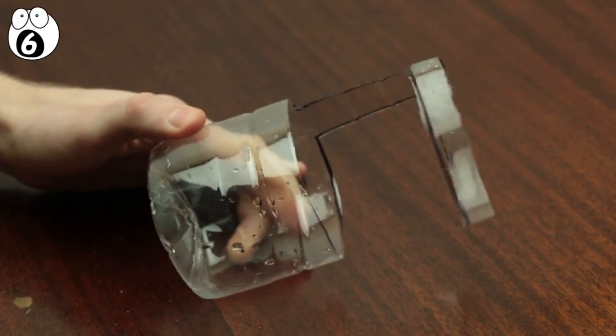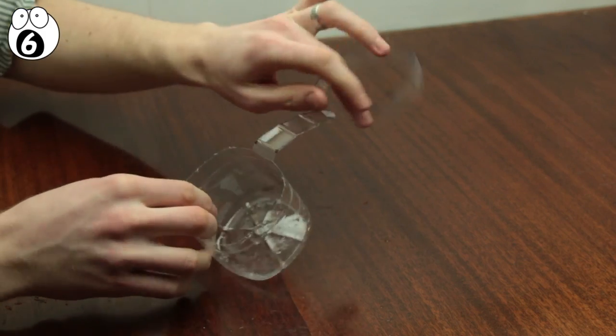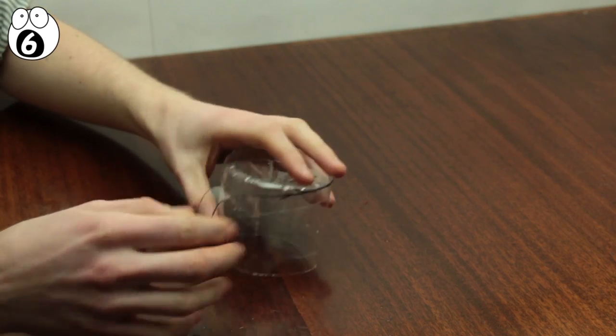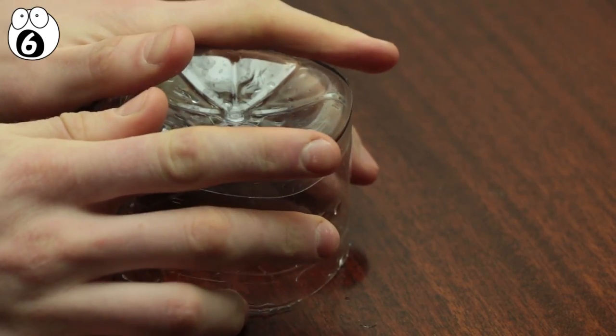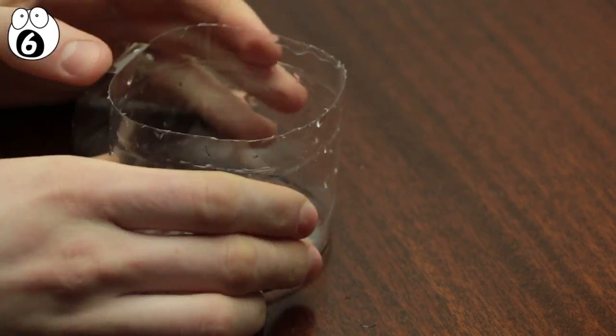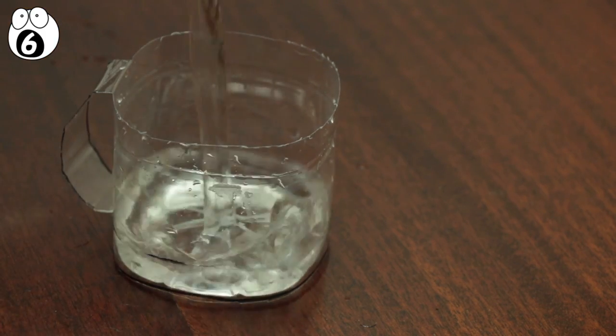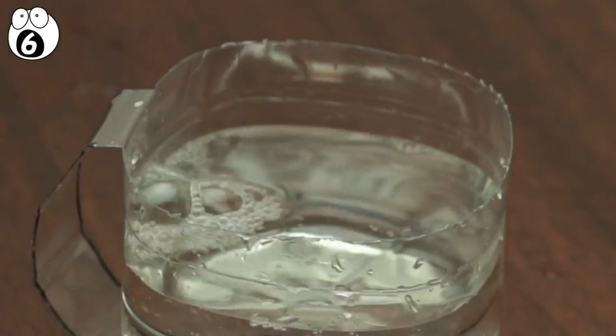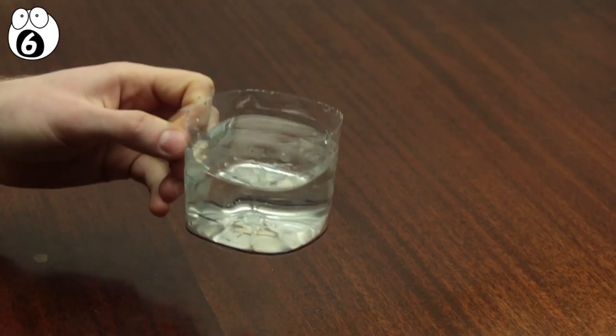I know, it doesn't look anything like a cup, but bear with me, this is where the magic happens. Simply grab the top ring and fold it downwards, inserting it into the base of the cup and pushing it firmly to keep it in place. There you go. Something to drink from an item you would have otherwise thrown away.